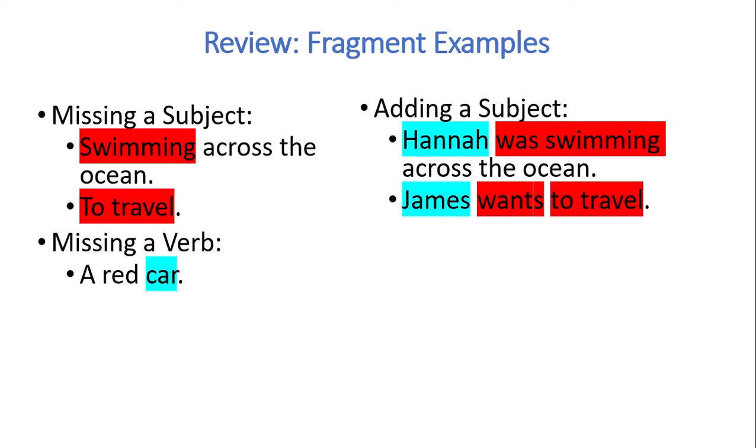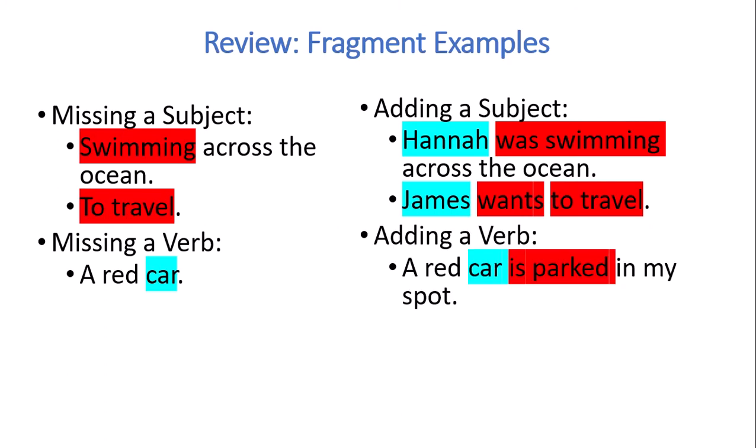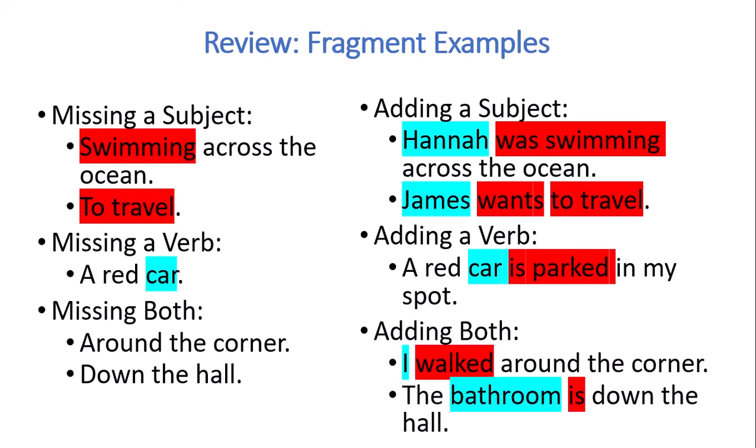Sometimes they could be missing a verb. A red car needs a verb added to it. A red car is parked in my spot. So there the subject again in blue and the verb phrase is parked which is added to that sentence to make it complete. Or it could be missing both. Around the corner down the hall. I walked around the corner. The bathroom is down the hall.